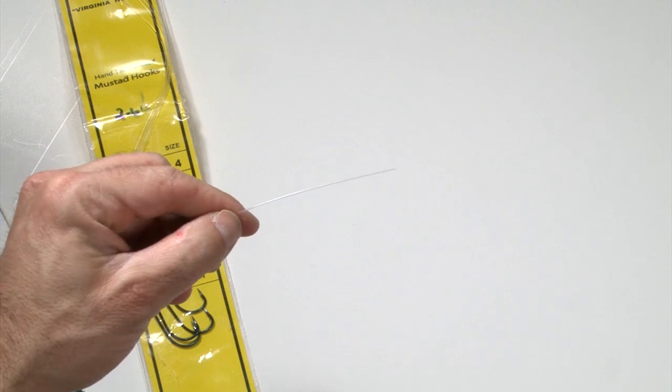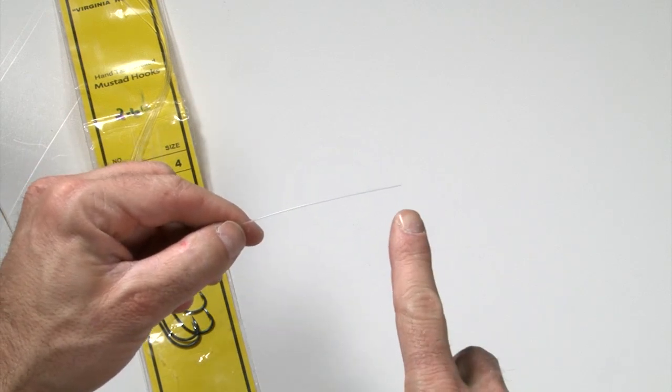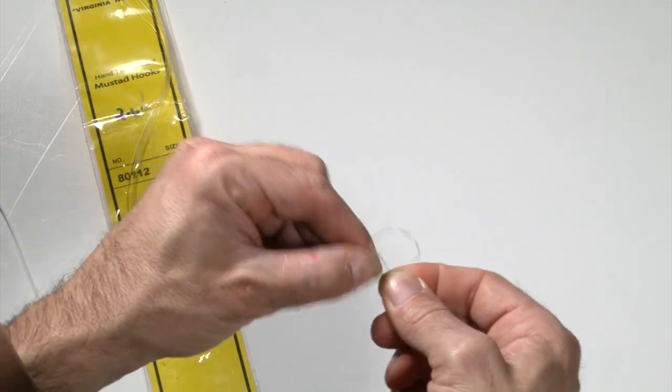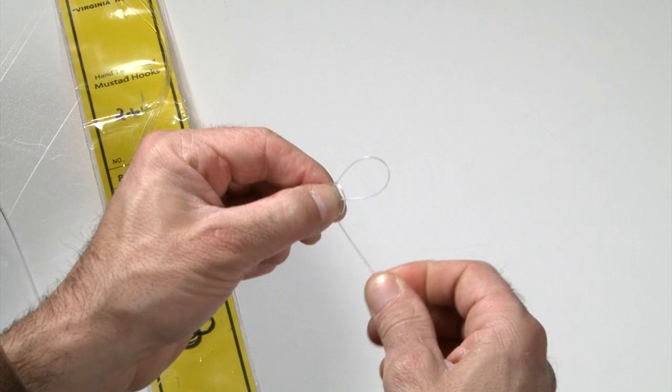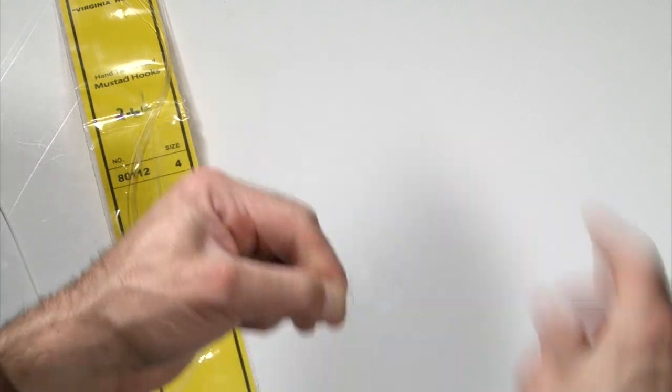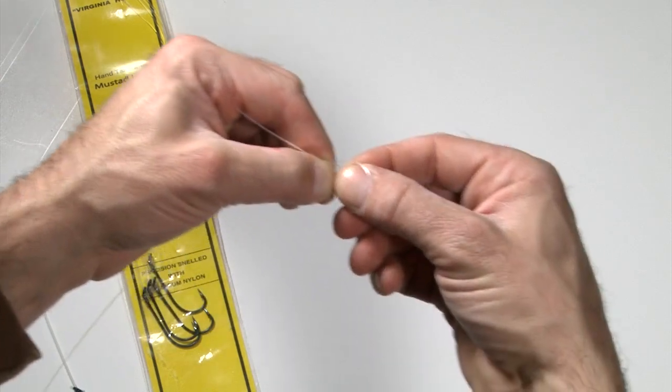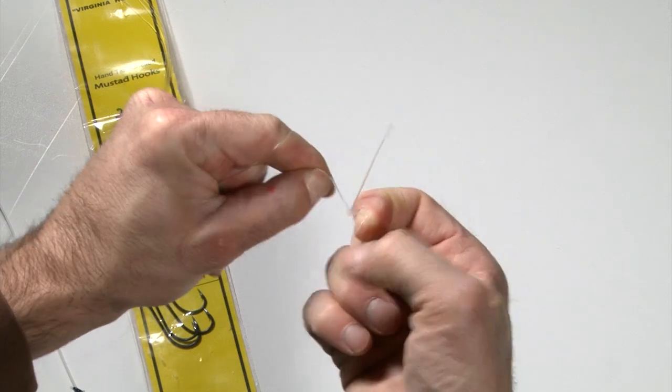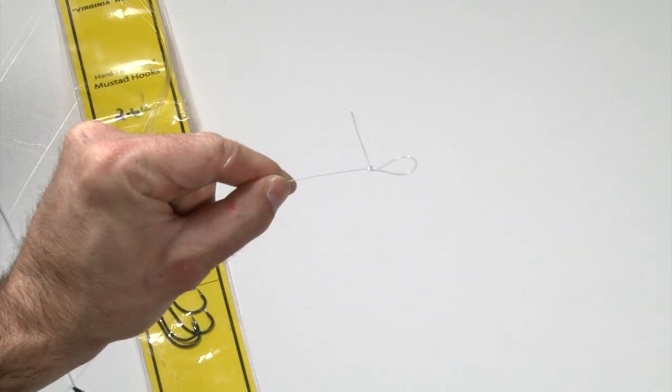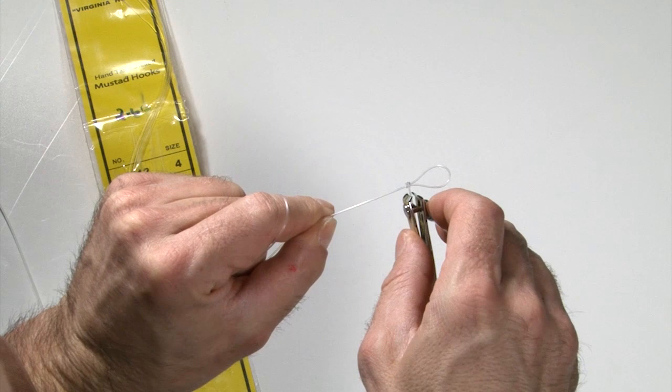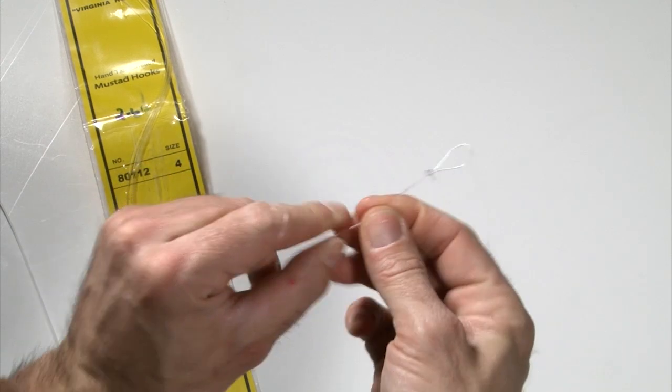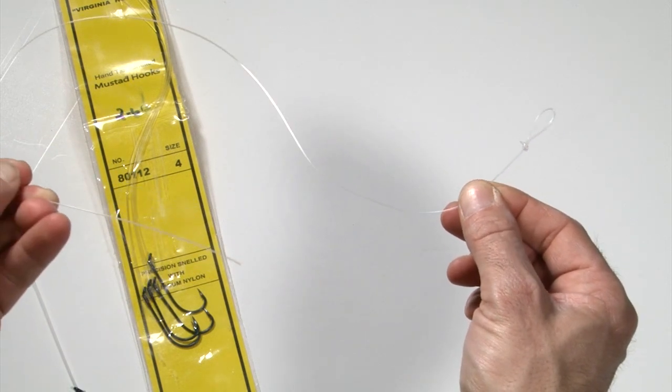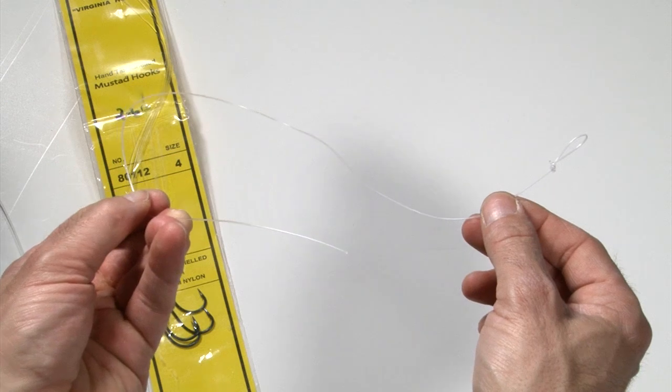Okay, to tie these rigs the first thing you need to do is tie a loop on the end of your leader. That's pretty easy. Take the end of your leader, make a loop, make a loop in front of it, take your tag end, put it in between the two loops you just created. Take the loop from the front and pull it through the back one. And there's your loop. Take your clippers, clip off your tag end and you're all set. Now you have a piece of leader with a loop on the end and a free end on the other side.